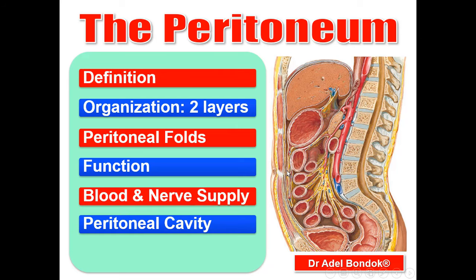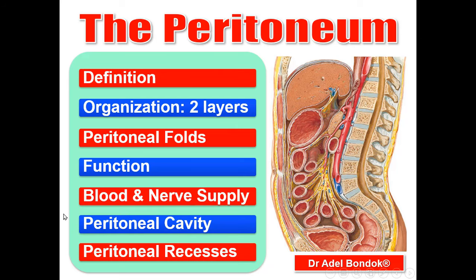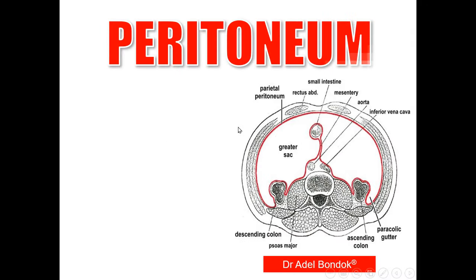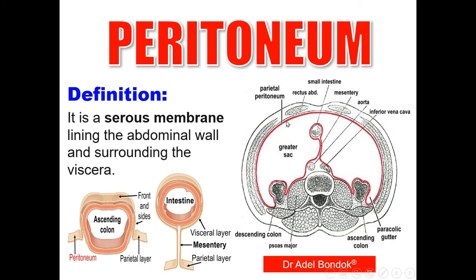Then the peritoneal cavity and the peritoneal recesses or spaces. The definition of the peritoneum: the peritoneum is a serous membrane lining the abdominal wall and surrounding the viscera — the anterior abdominal wall and the posterior abdominal wall. The parietal layer and the visceral layer are shown. It is a serous membrane like the pleura and the pericardium.